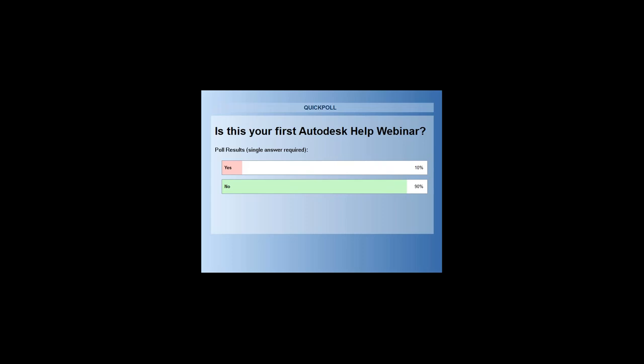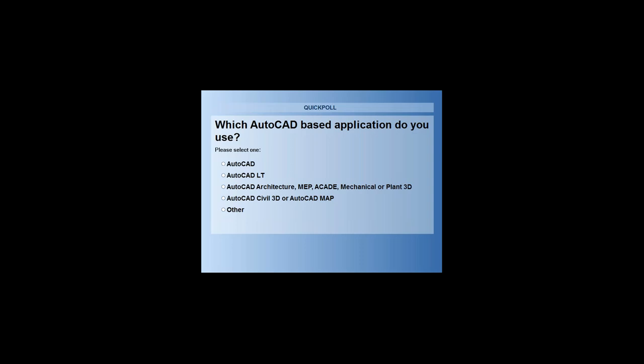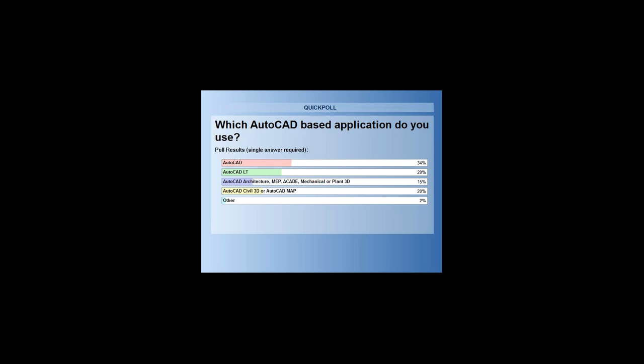We'd like to know which AutoCAD-based application you use: AutoCAD, AutoCAD LT, one of our vertical software products like Architecture, MEP, Electrical, Mechanical, Plant, Civil 3D, Map, or something else entirely? It looks like most of you are working in the full version of AutoCAD, followed by LT, and then a mix of our vertical software products.